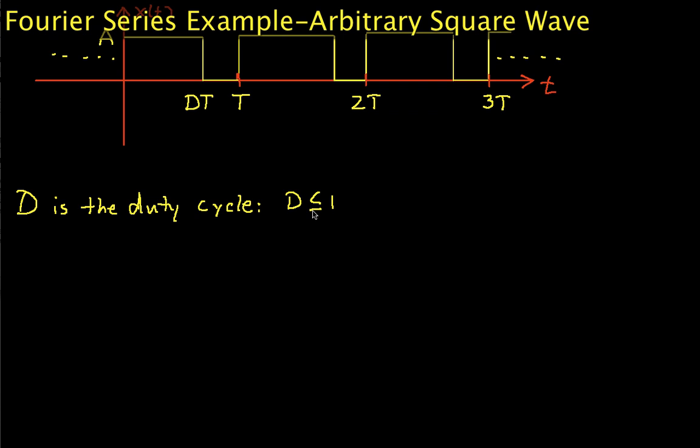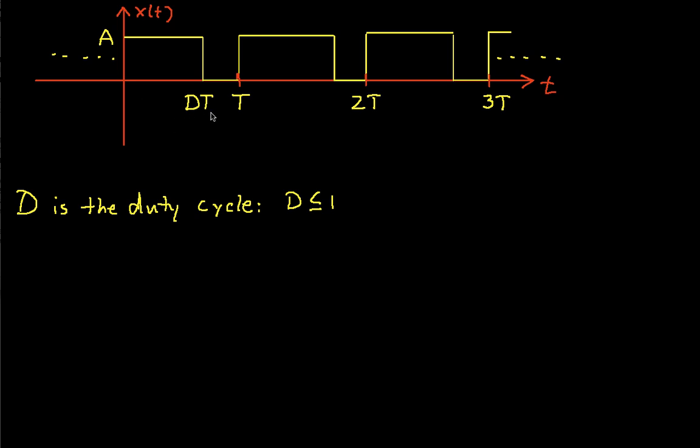The square wave is arbitrary in the sense that the amplitude is some constant A, and the period is some constant T.